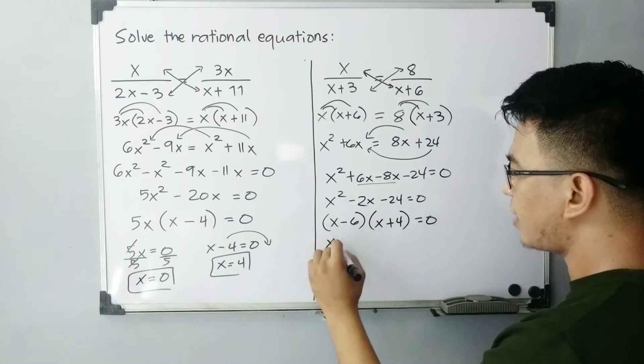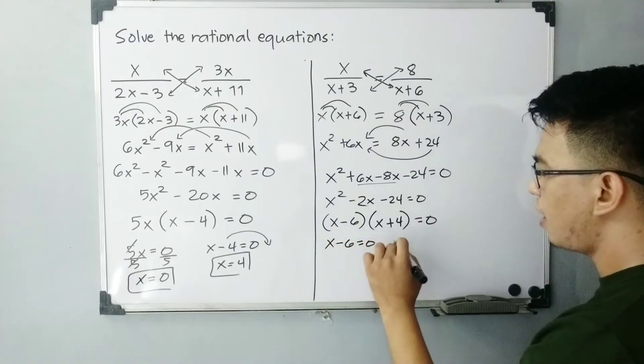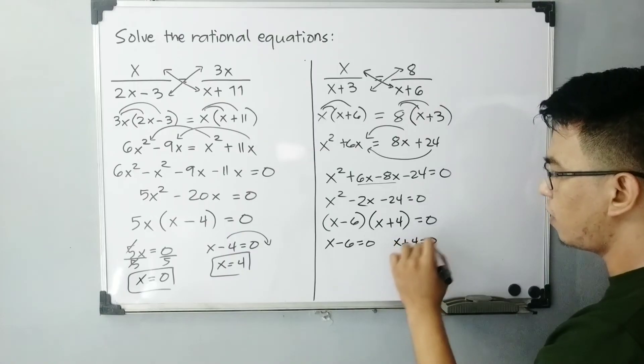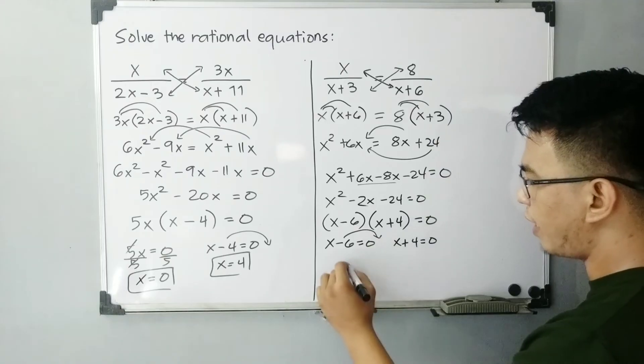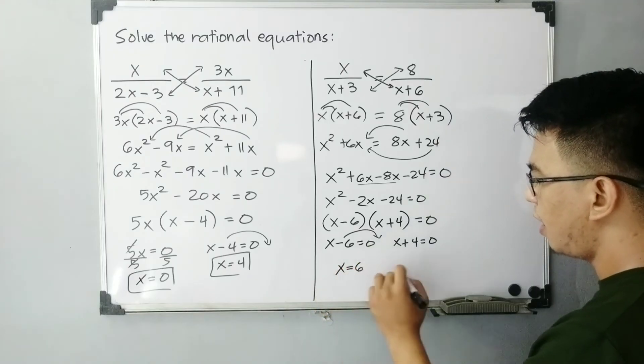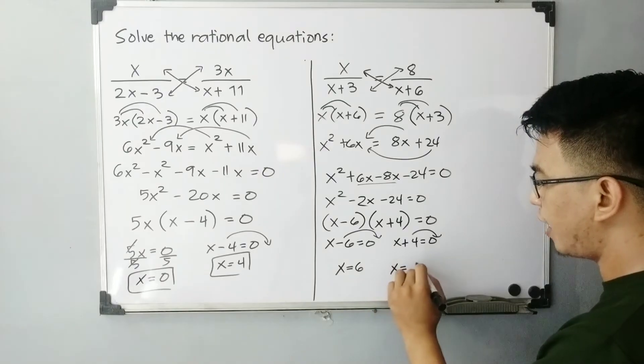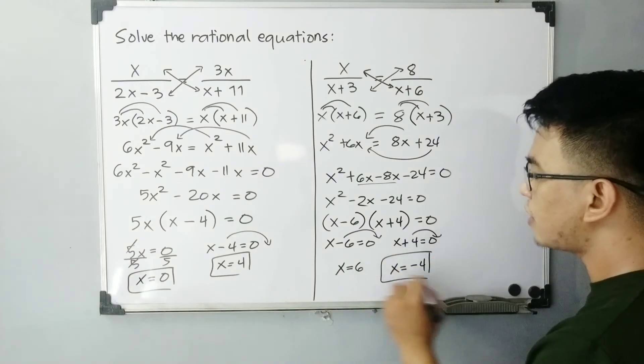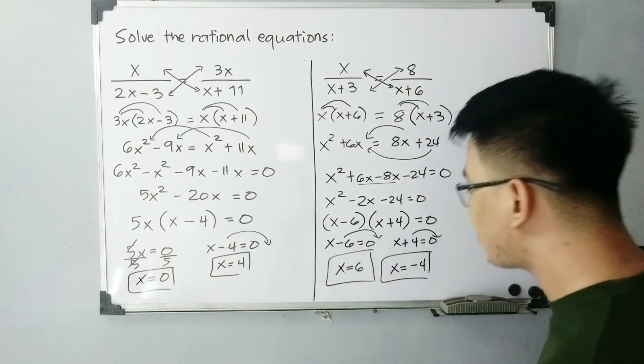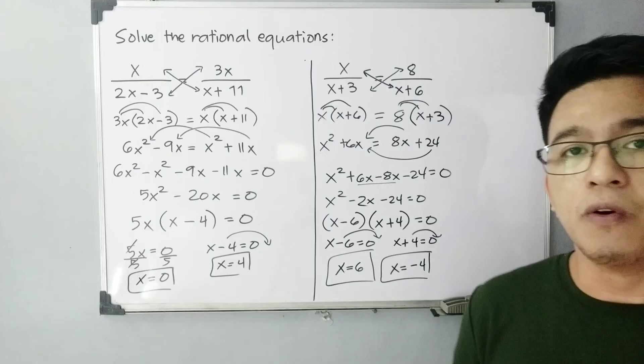So solving for the value of x, x minus 6 is equal to 0. x plus 4 is equal to 0. Transpose this one, your x is equal to 6. And then the other, transpose this one to become negative, your x is equal to negative 4. So these are the possible values of x in number 2, which is 6 and negative 4.